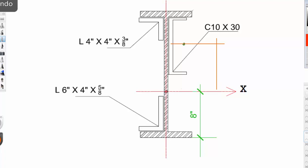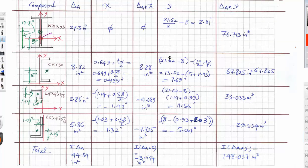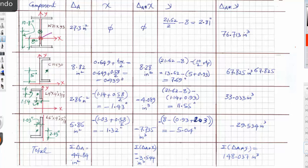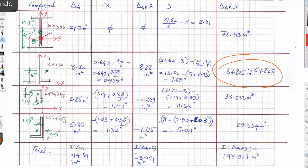Going to the calculation part: we have the depth 21-something, minus 8 (the reference point), then 10 divided by 2 is the half-depth of the channel, and then subtract the flange thickness. If you put these numbers together as explained, you'll get the answer. That part is just multiplication.